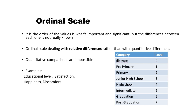The next one is ordinal scale. Ordinal, as its name suggests, means order. Ordinal scale also has a categorical data type, but here the categories have some order. The order of the values is important and significant, but the difference between each one is not really known — we cannot quantify the difference between two categories, but we know that there is some order between them. Ordinal scale deals with relative differences rather than quantitative differences.